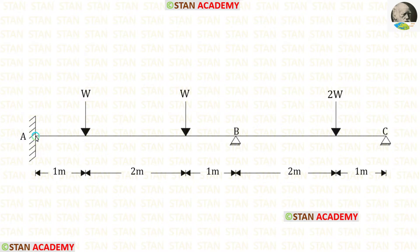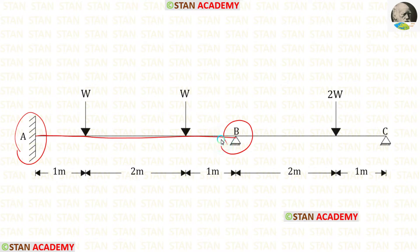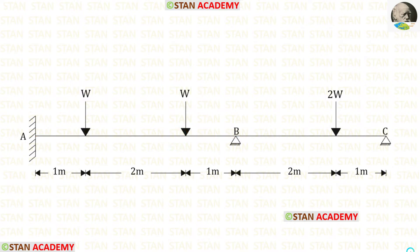First, let us take span AB. In this span, at the fixed end A, there will be a plastic hinge. At joint B, there will be another plastic hinge. The third plastic hinge can occur either under this point load or under this point load. So in span AB, there will be two mechanisms.